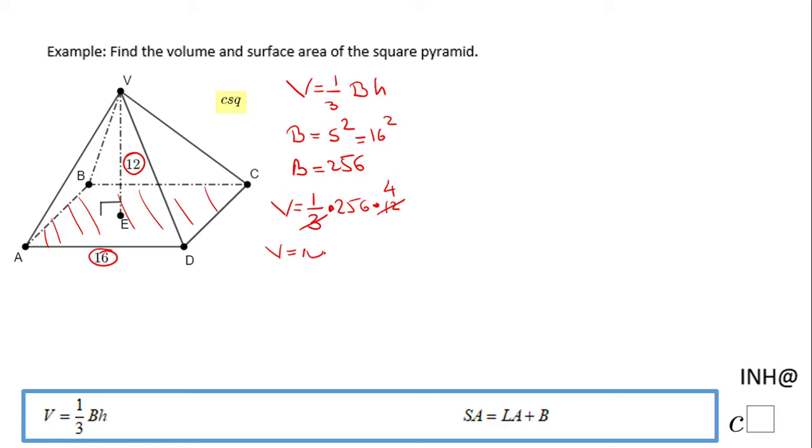The volume of this square pyramid is 1024 cubic units. And now we can move to the second part, and we're going to look to the surface area. You notice the formula is right here: surface area is the lateral area of this pyramid plus the base.